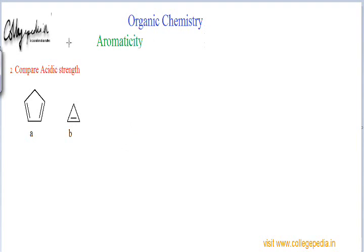You can remove H+ either from an sp3 hybridized carbon or an sp2 hybridized carbon. The bond strength between carbon and hydrogen is higher when that carbon has a higher percentage of s-character. The sp2 hybridized carbon has a higher percentage s-character than sp3, so preferably hydrogen will be abstracted from the sp3 hybridized carbon rather than the sp2 hybridized carbon.